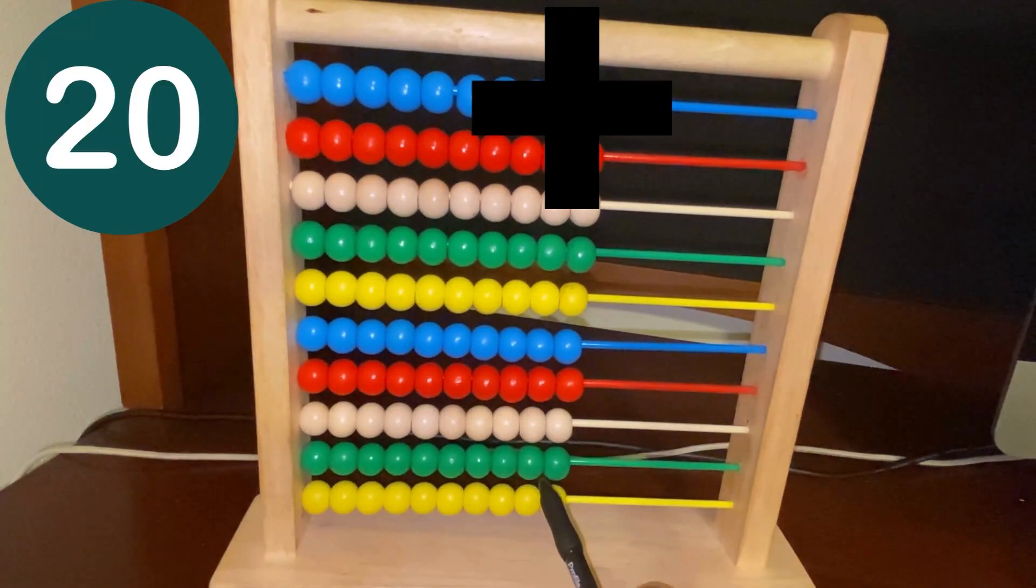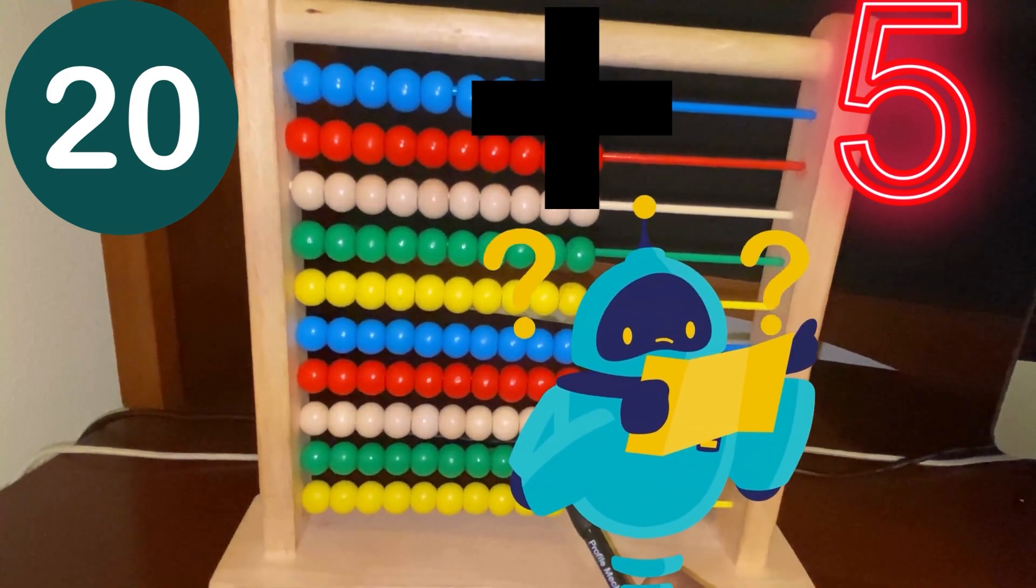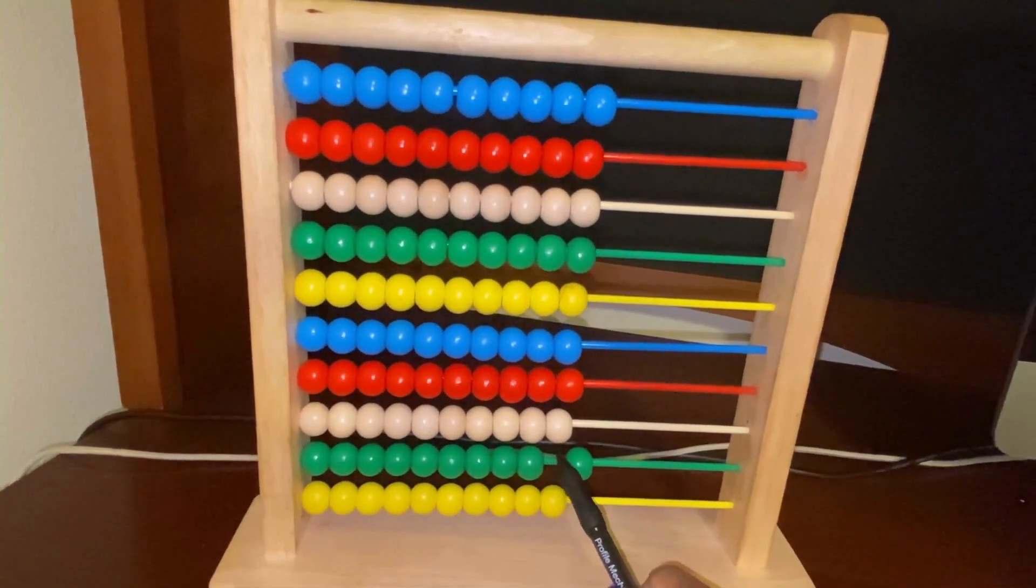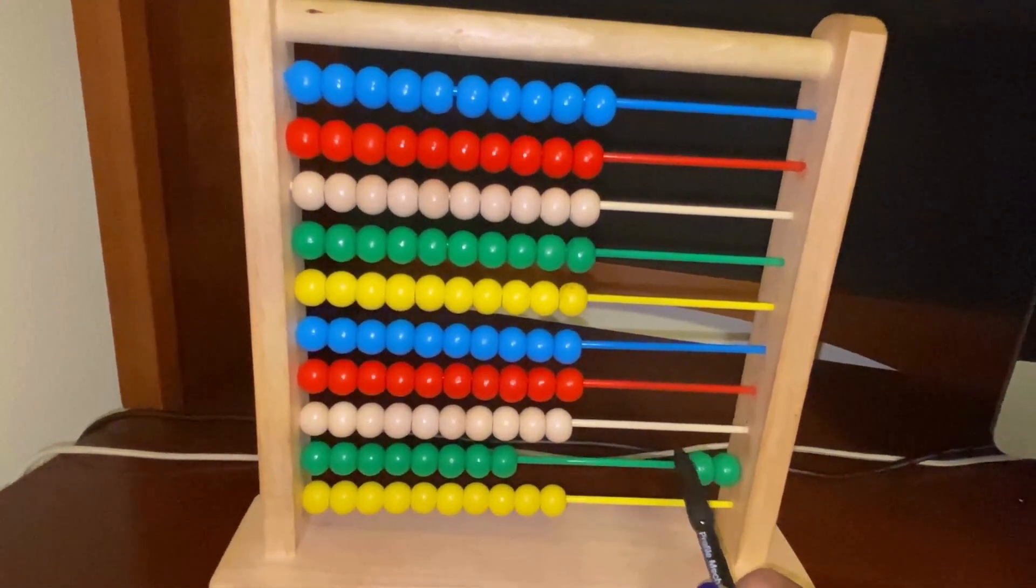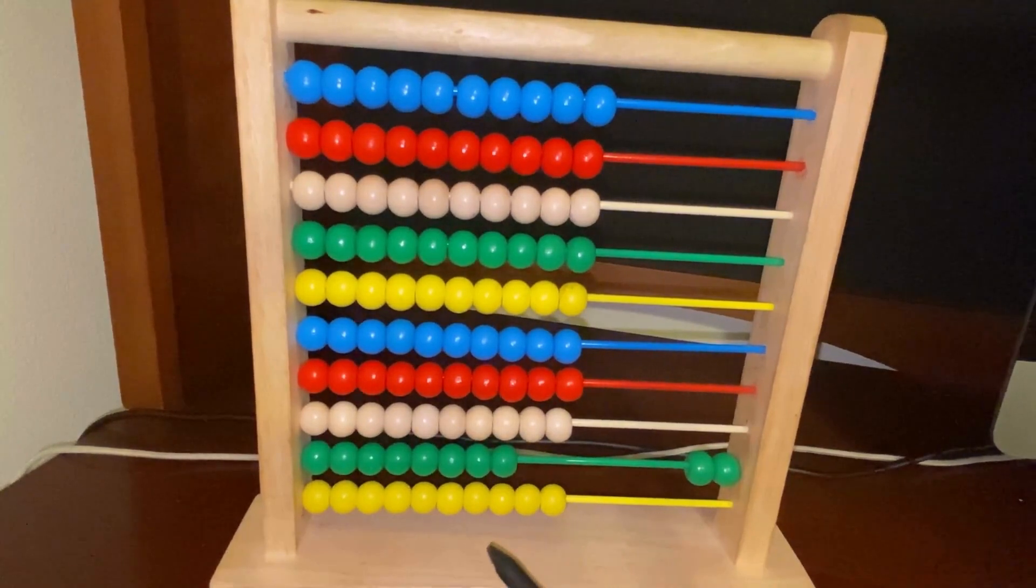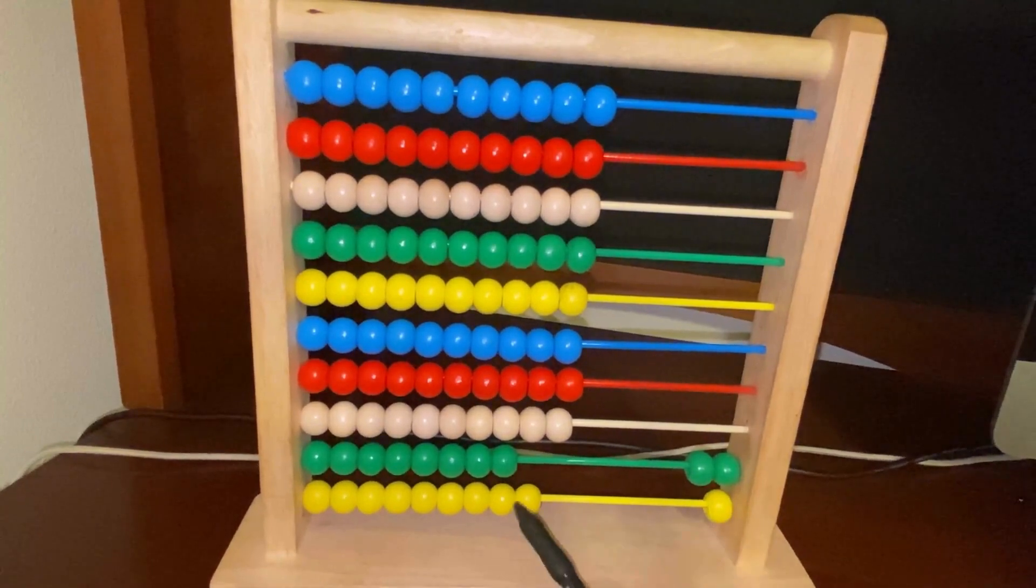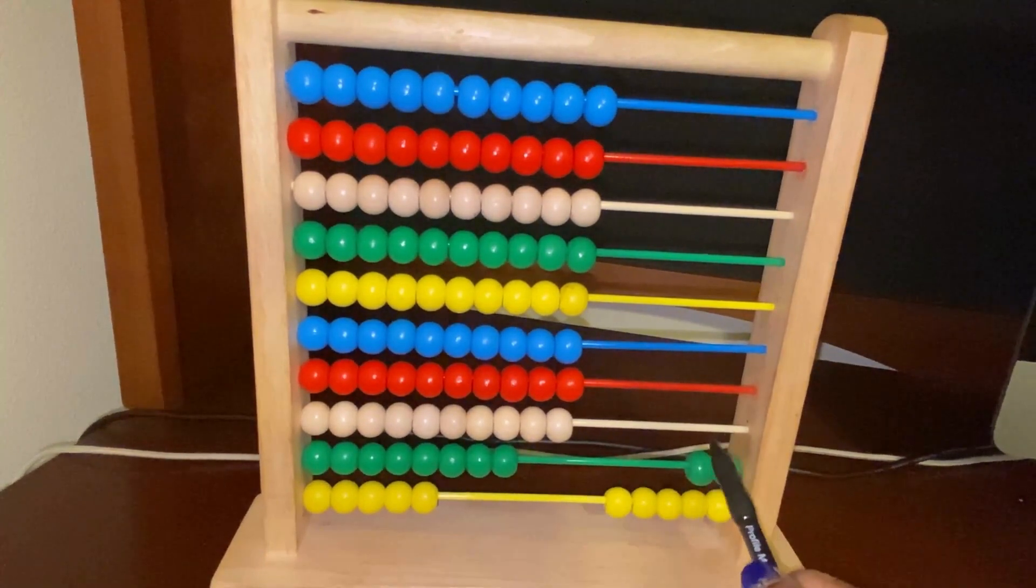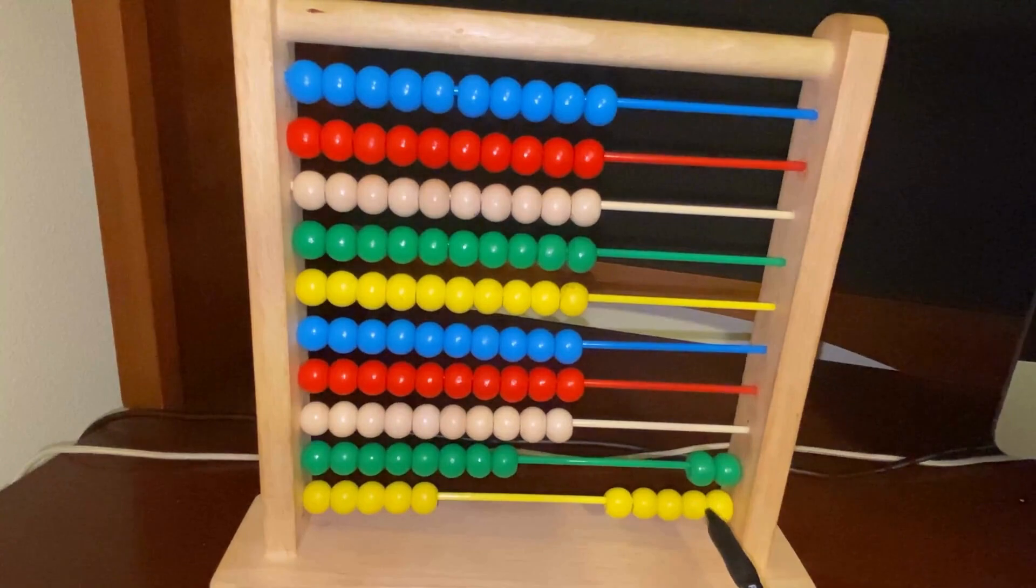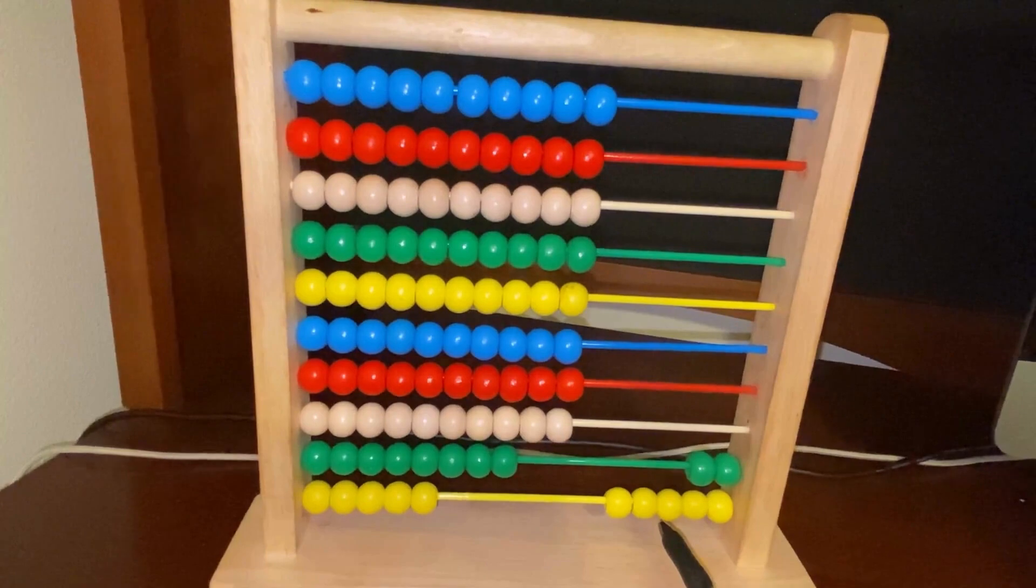What does 20 plus five equal? So how will we do that? I don't know. So let's say here we have 10, 10, 20, 20, and then we need five. Five. Count. 21, 21, 22, 23, 24, 25. Oh. So what is 20 plus five equal? 25. Isn't that great? Yes.